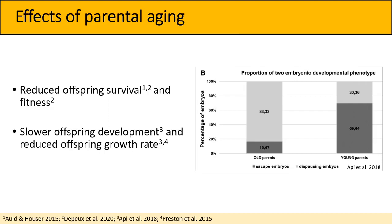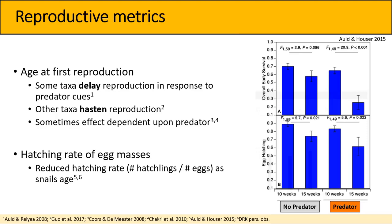For my response variables today, I'll only be focusing on two: age at first reproduction and hatching rate. Depending on the species — and even sometimes depending on the predator — we see differences in age at first reproduction and how organisms respond. Some taxa will delay reproduction when exposed to predator cues, while other taxa will reproduce sooner.